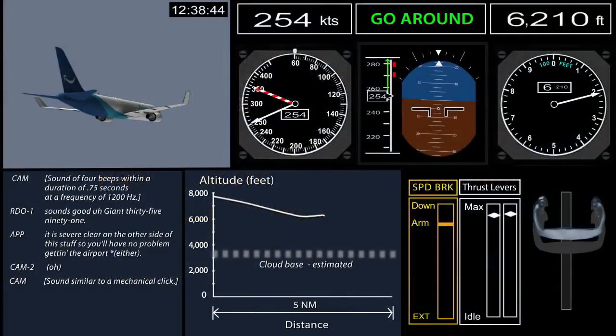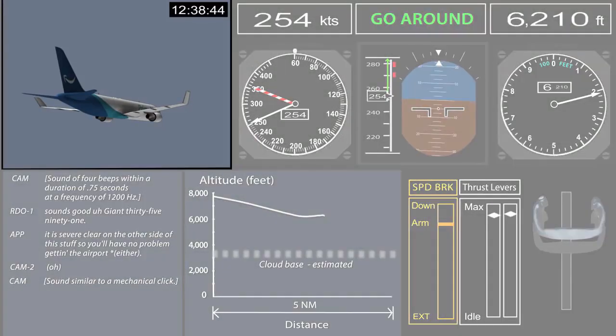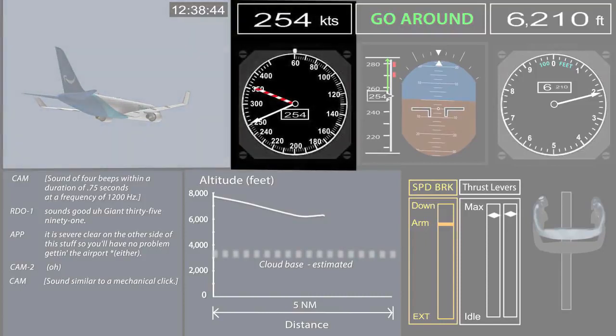We will show a short animation depicting the sequence of events. Note that the depictions are not necessarily identical to the airplane displays. In this still frame, you can see a simulated external view of the airplane and the analog airspeed indicator with digits to aid clarity.